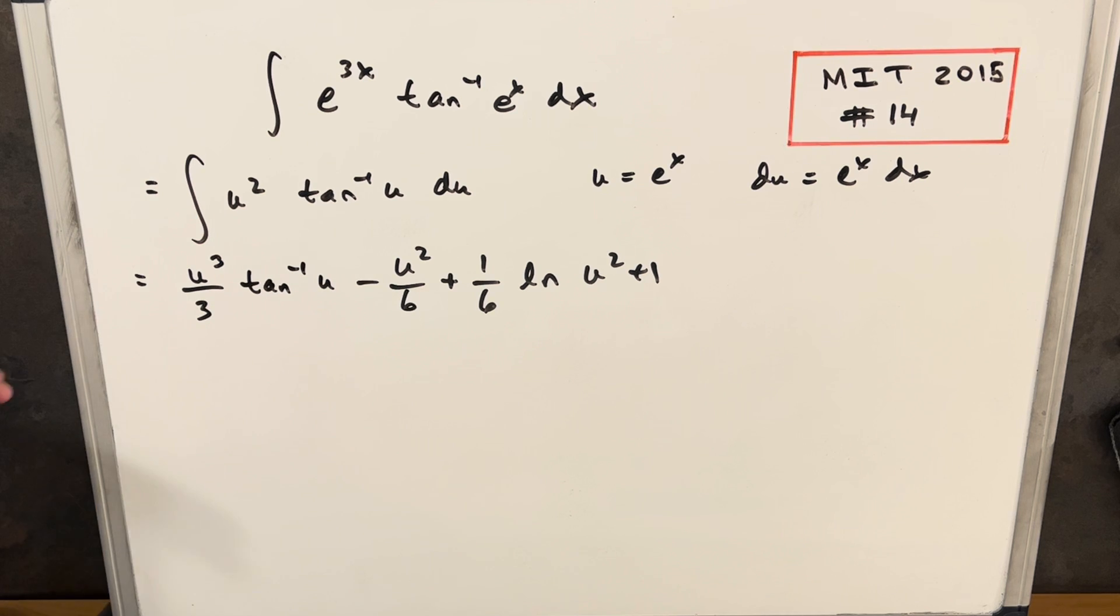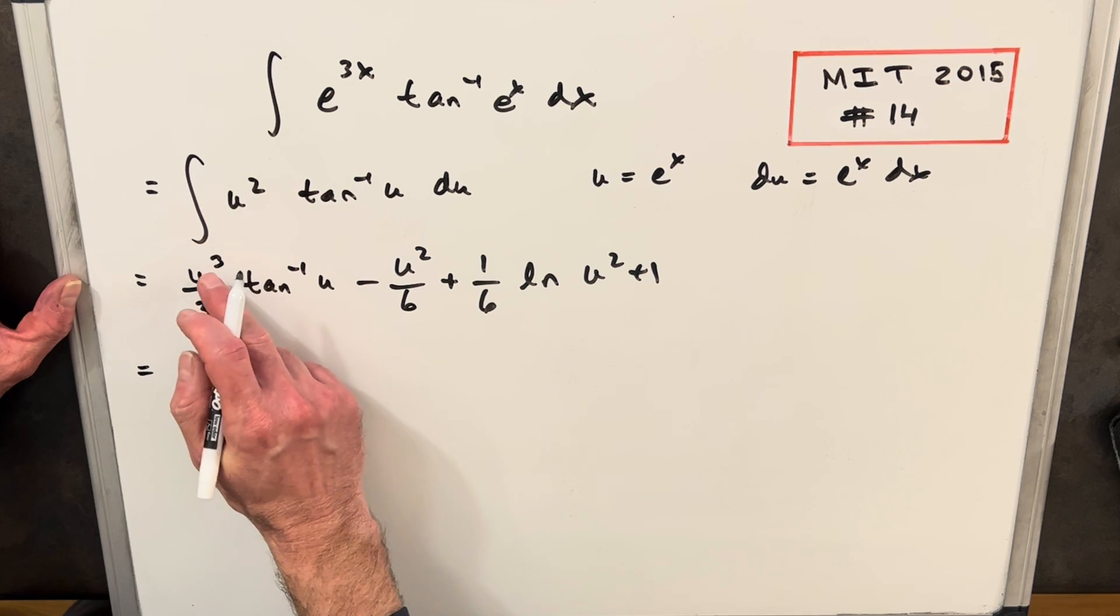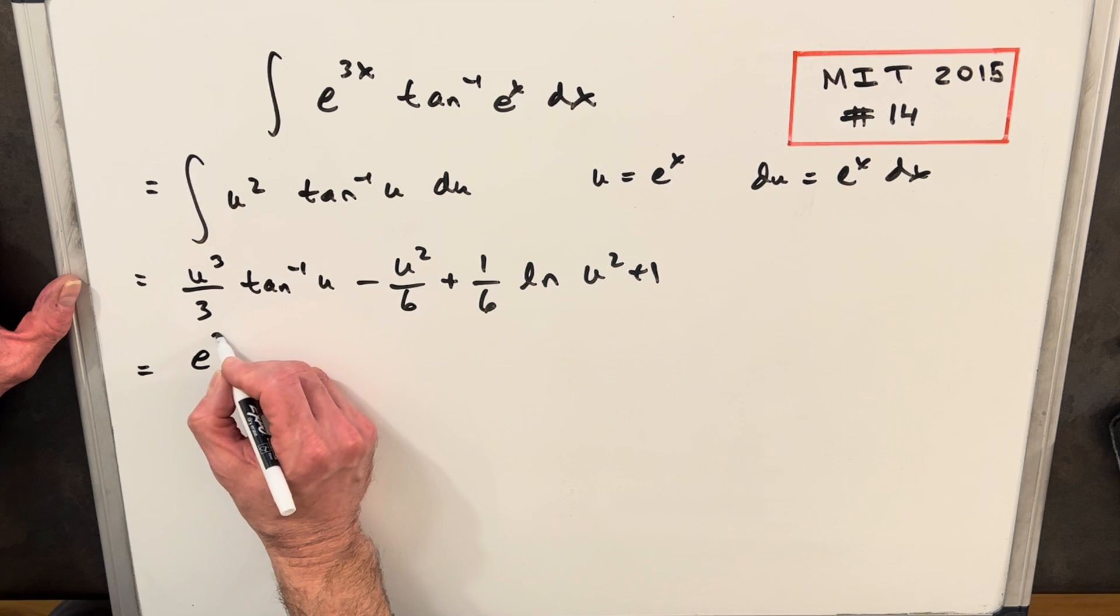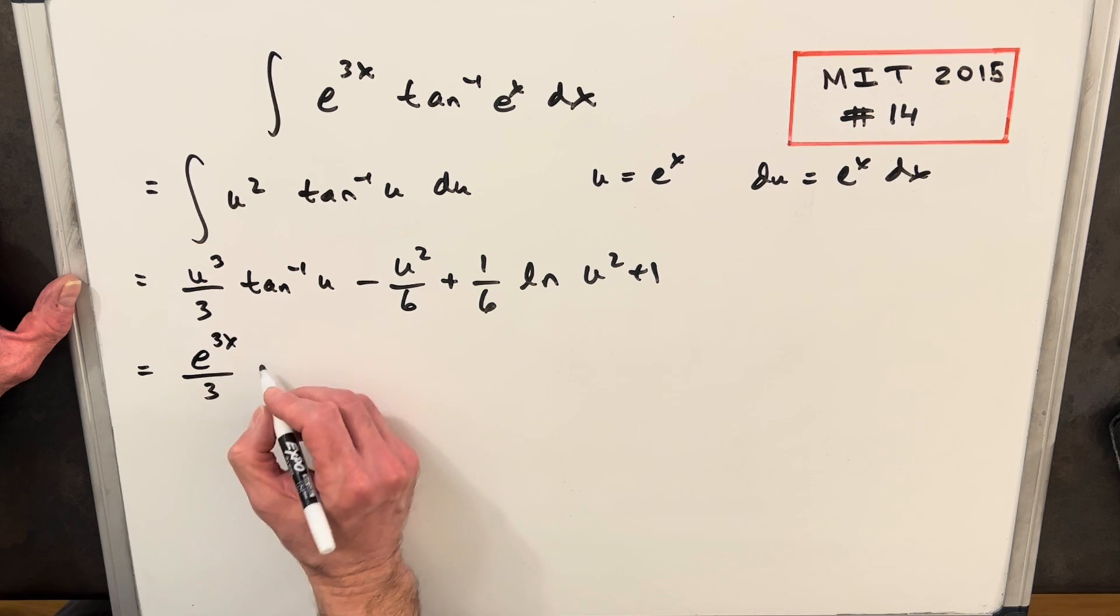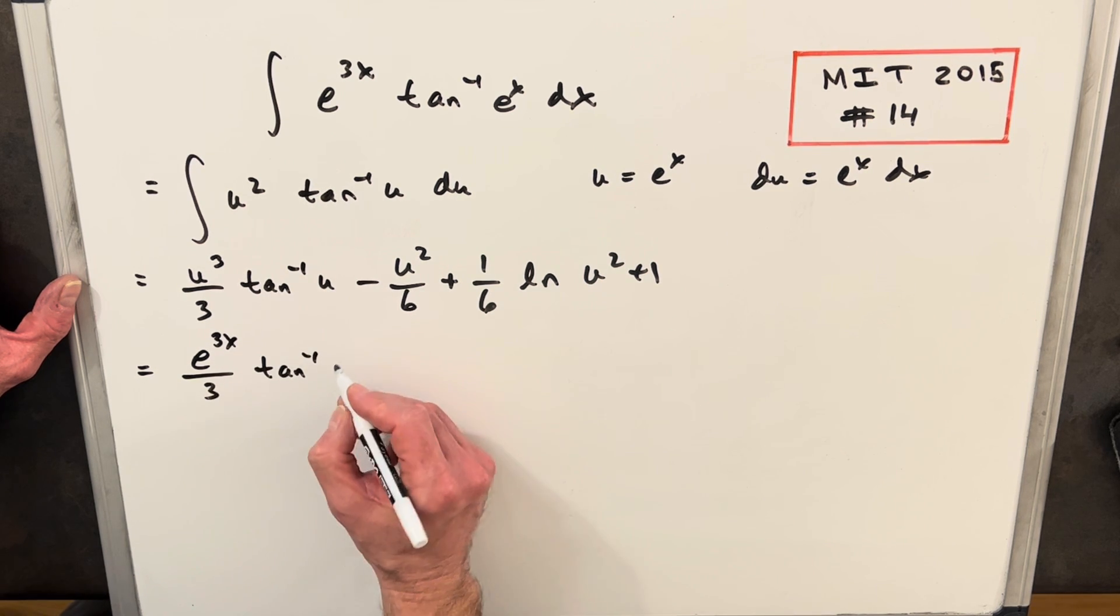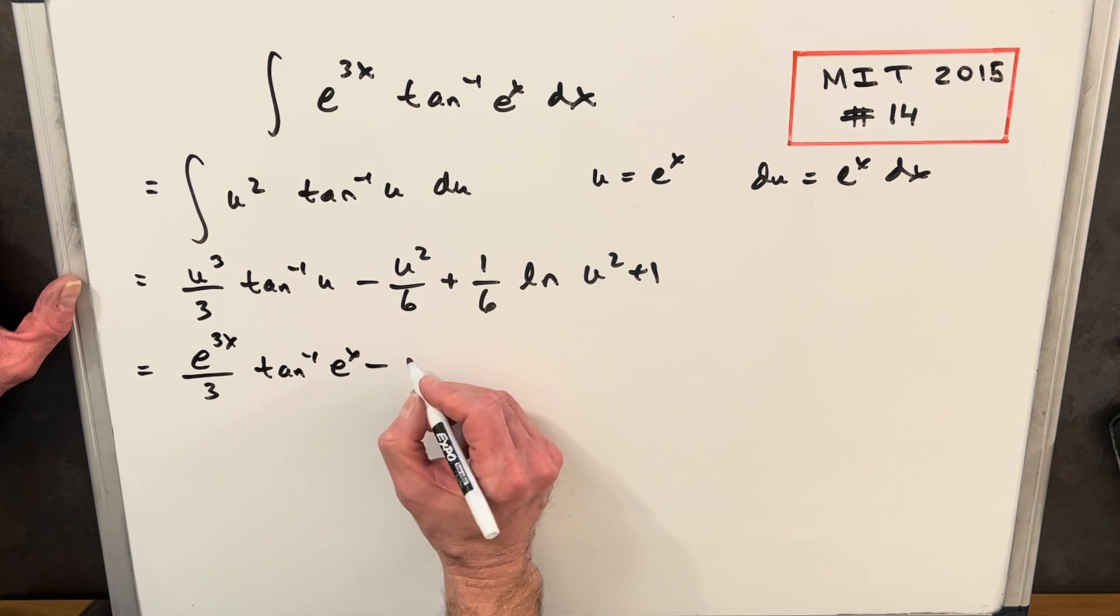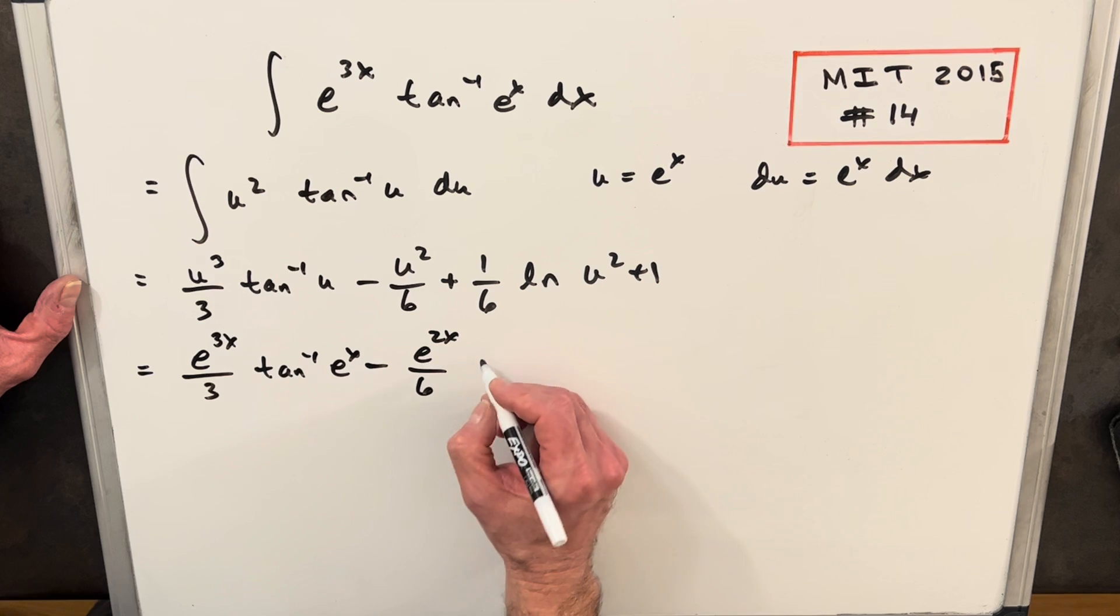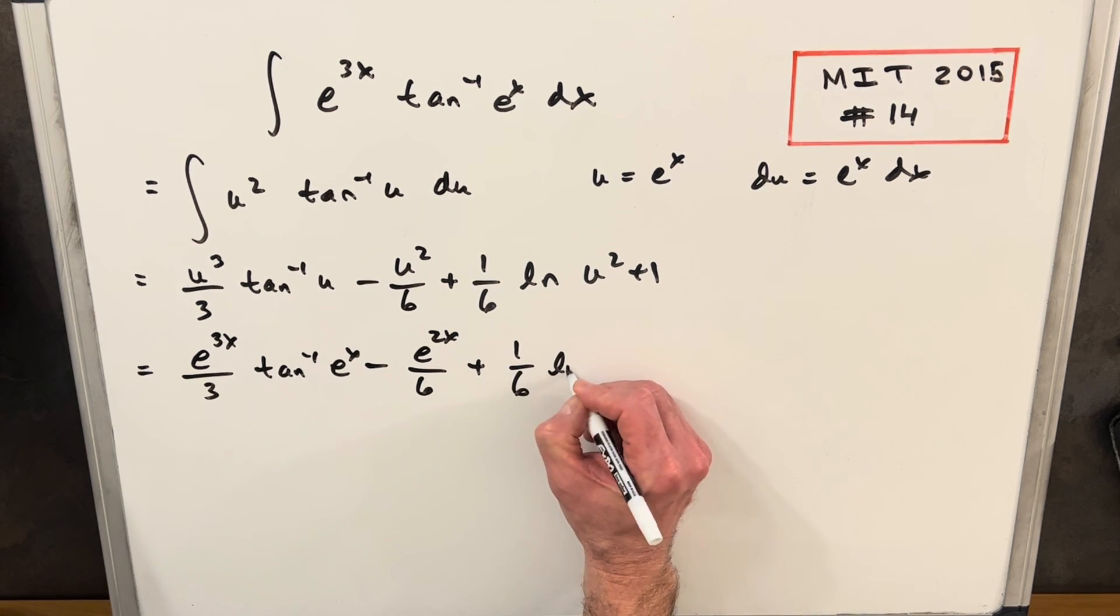Okay, now we're almost done. We just need to back substitute. We have our u value right here, so we're going to plug that in for all of our u. So u cubed is going to be e to the 3x, just cubing e to the x over 3, tan inverse e to the x.